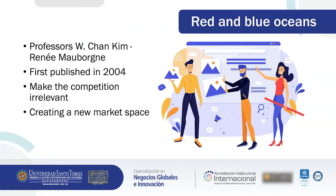In the year 2004, Professors Chan Kim and Renée Mauborgne came up with a book called Blue Ocean Strategy. The theory continued evolving and in 2015 the second expanded edition was published. The whole idea was to be able to pass over the competitors, but not in the traditional way of taking a bigger market share, but making companies more competitive than ever.